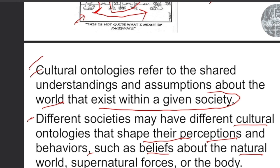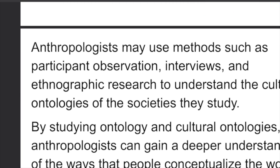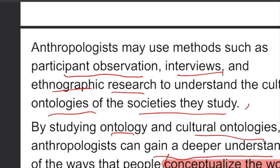Cultural ontologies specifically refer to the shared understanding and assumptions about the world that exist within a given society. Different societies may have different cultural ontologies, which shape their perceptions and behaviors — such as beliefs about the natural world, supernatural forces, or the body. Anthropologists may use methods such as participant observation, interviews, and ethnographic research to understand the cultural ontologies of the societies they study. By studying cultural ontologies, anthropologists can gain a deeper understanding of the ways people conceptualize the world around them and make sense of their experiences.